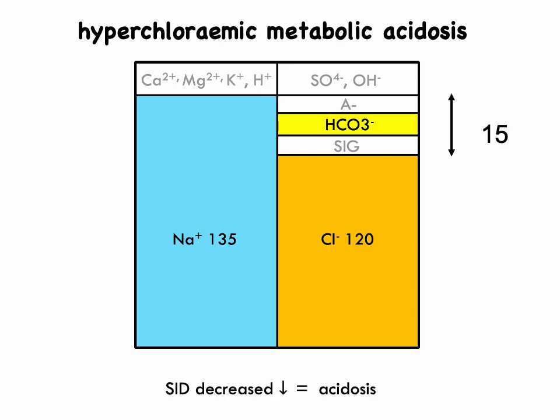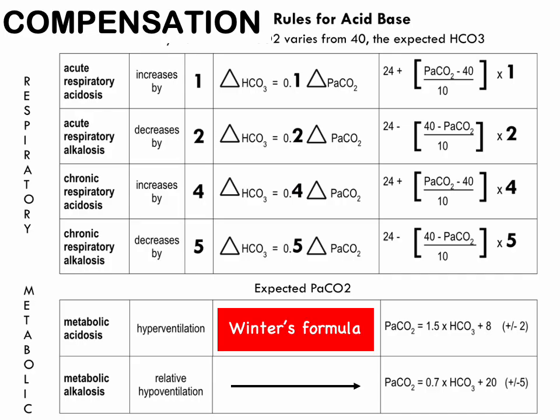It's always preferable to use a balanced solution intravenously, like Balsol, Plasmalyte, or Ringer's lactate. This is a slide with a reminder of the compensation formulae — I've included it in my blood gas cheat sheet. The most important compensation rule is probably Winter's formula, used in metabolic acidosis. The whole point of figuring out the compensation rules is to decide if there's another concomitant primary acid base condition, and it also gives a clue as to the chronicity of the acid base condition.